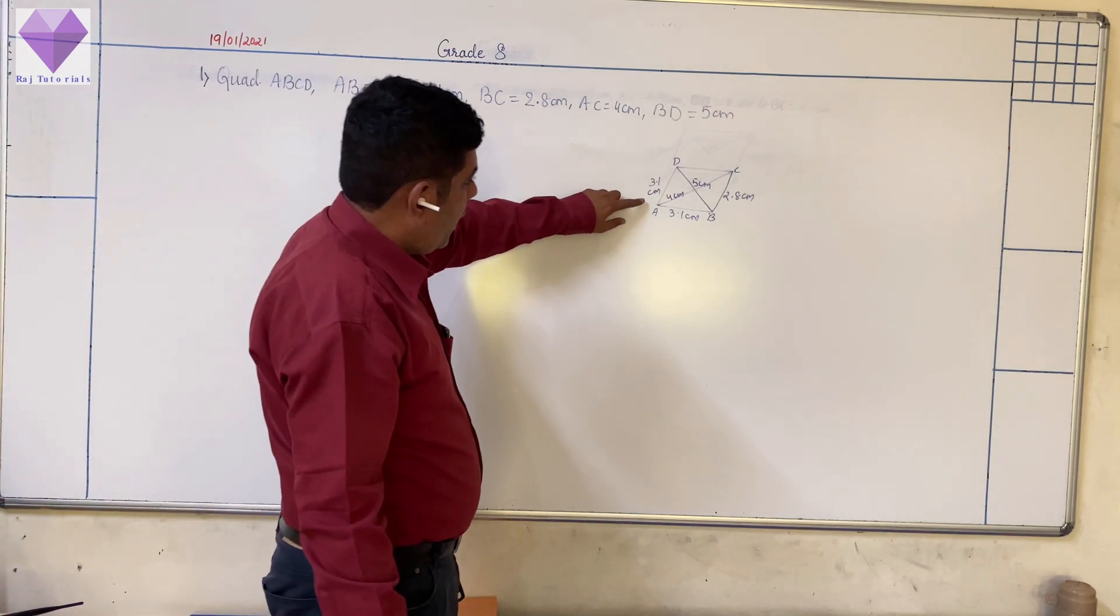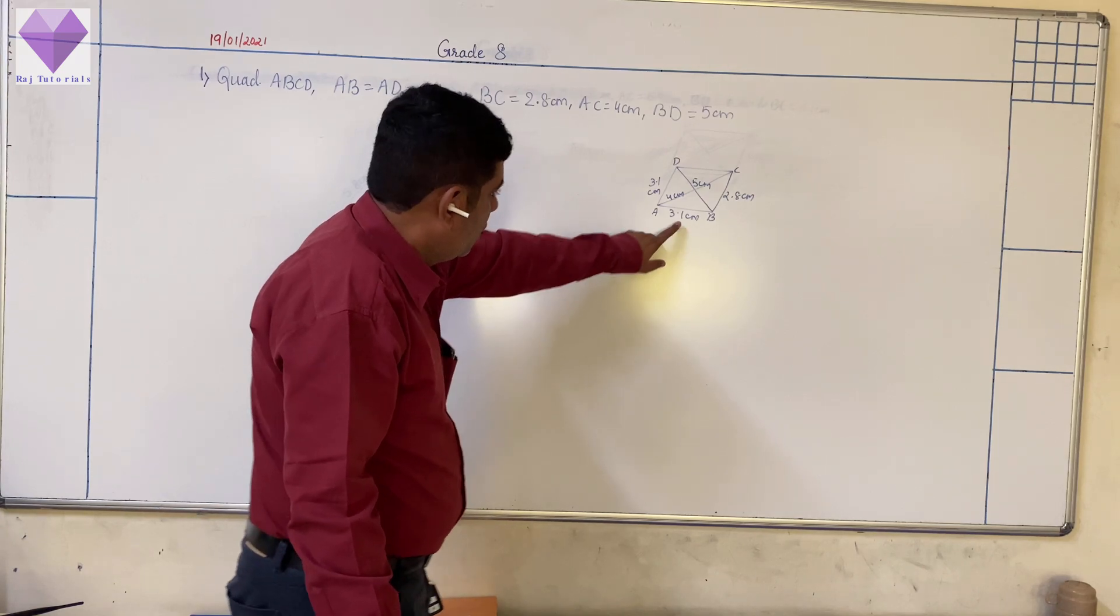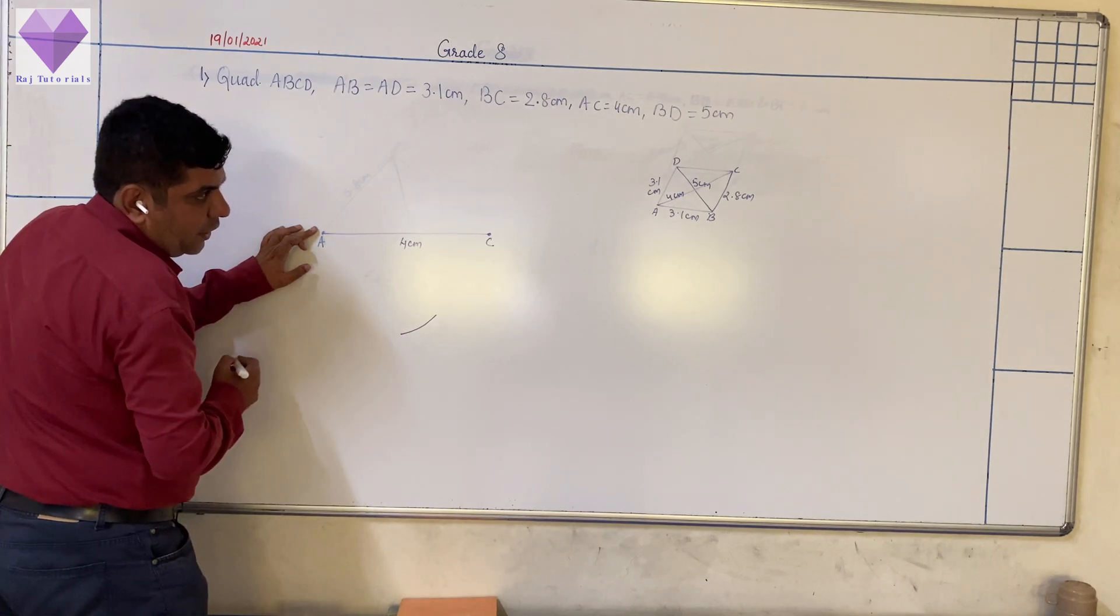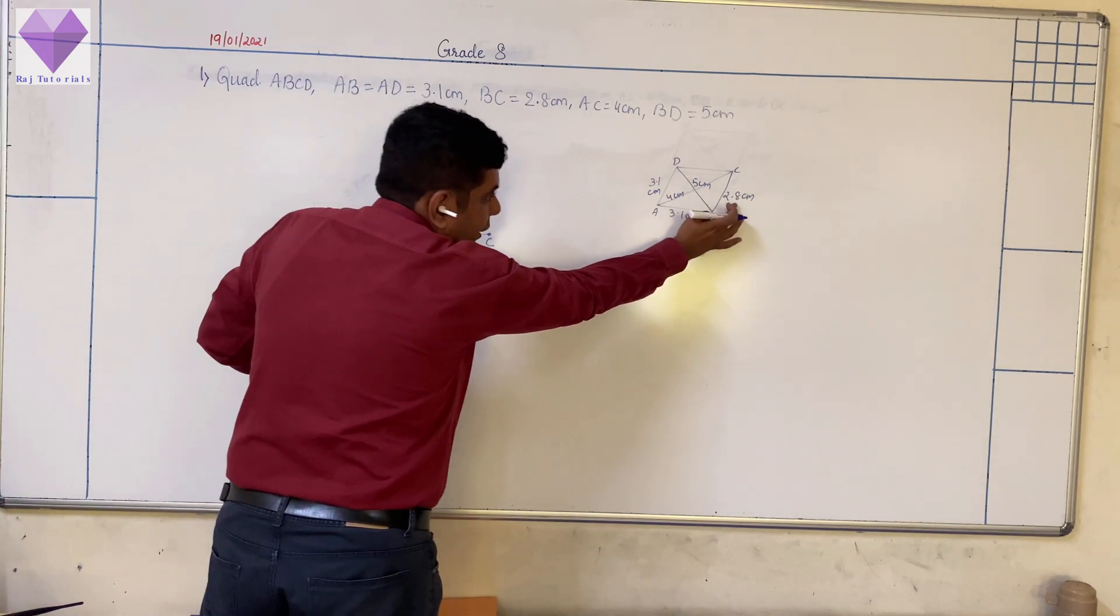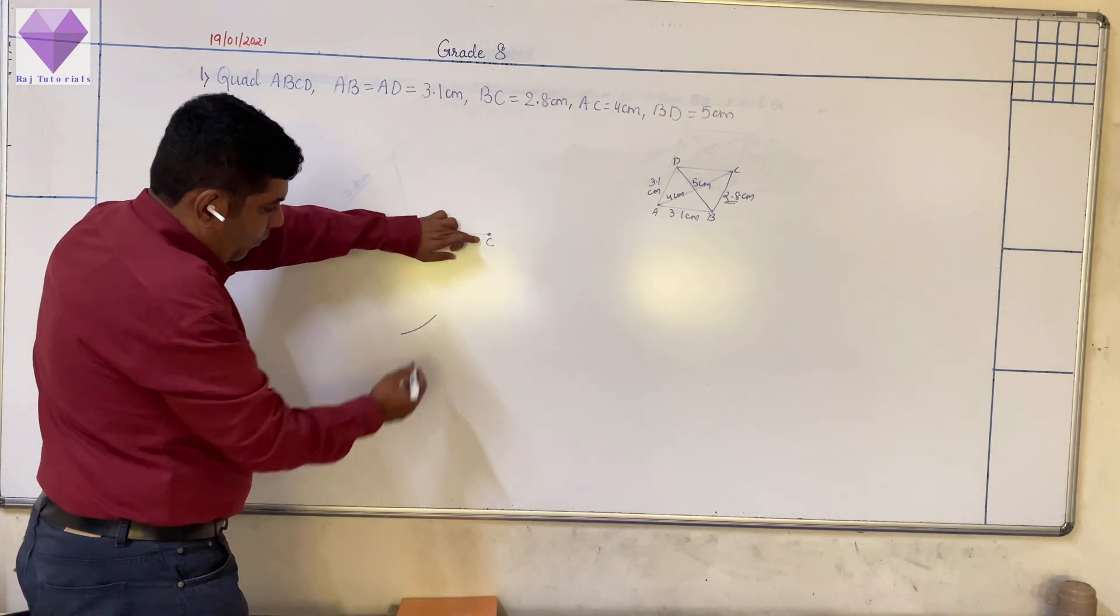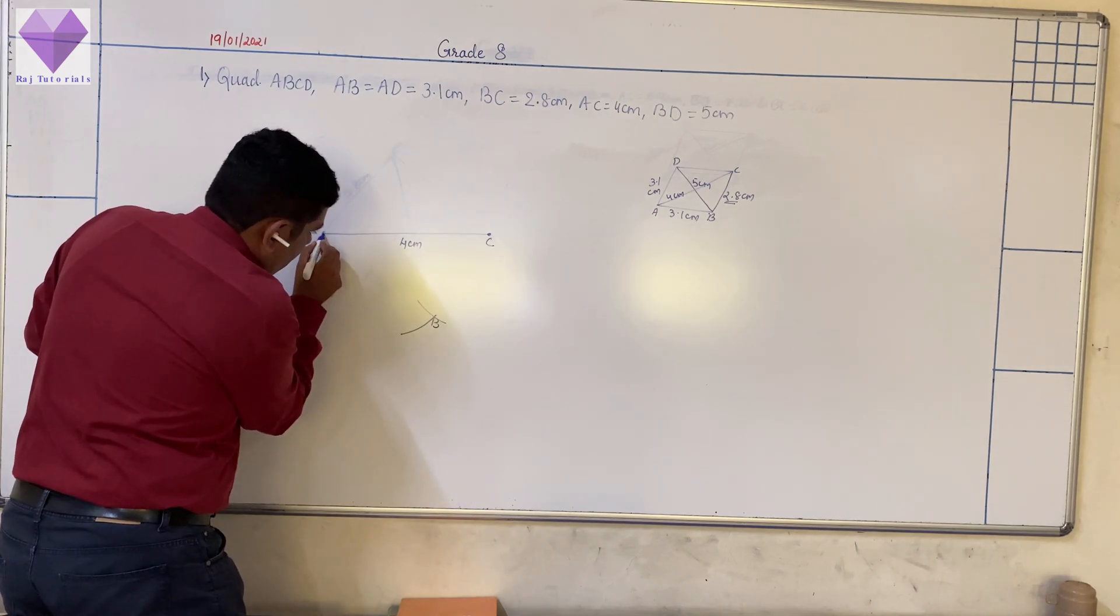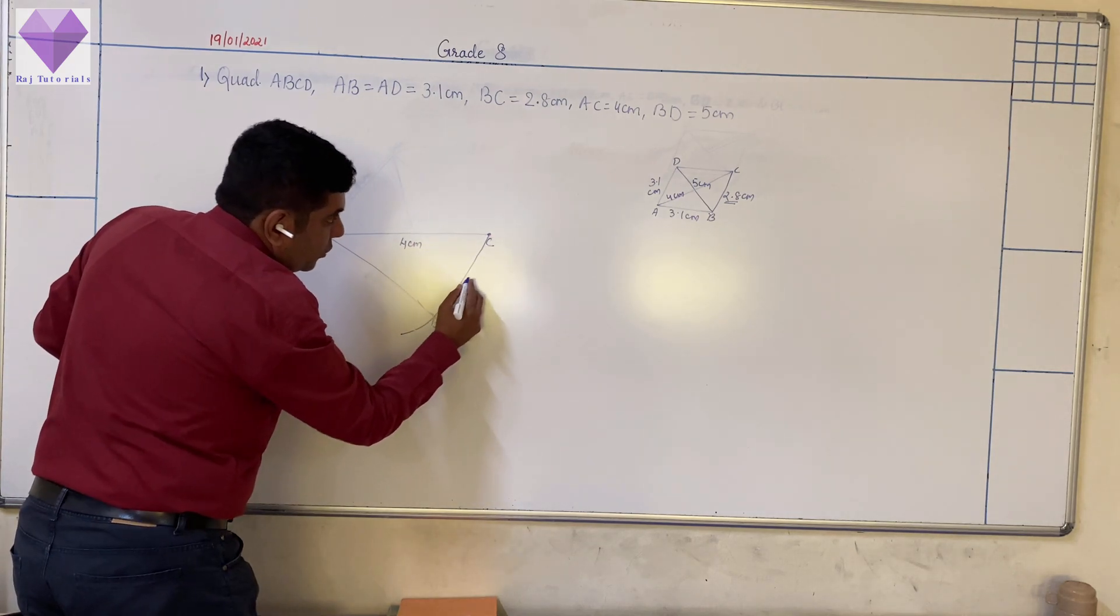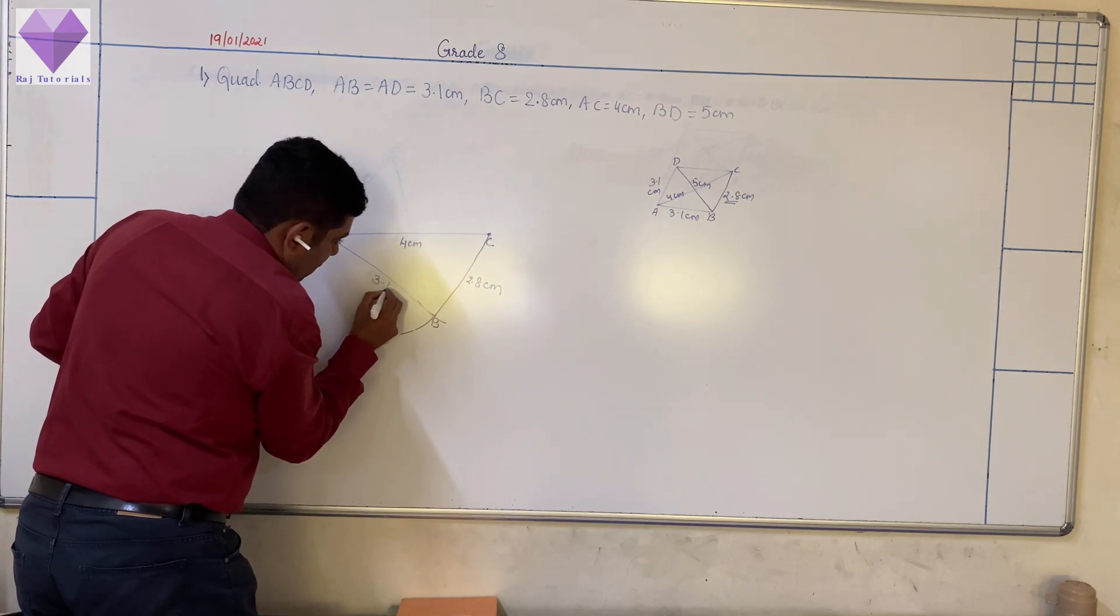Now, here I am given 3.1 centimeter, here I am given 3.1 centimeter. So first, with A as center, I am drawing an arc of 3.1 centimeter. Then with C as center and 2.8 centimeters, I am drawing second arc. So this I got my B point. Now, I am joining AB and BC. So this I got as 2.8 centimeter, this is 3.1 centimeter.